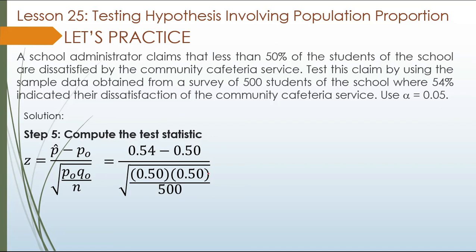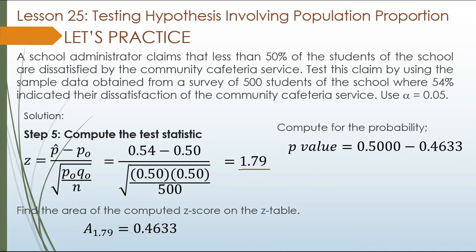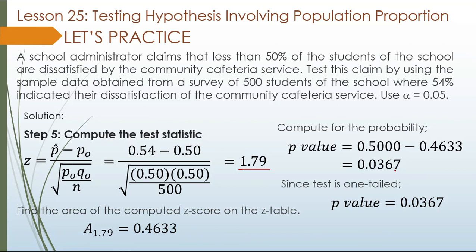Step 5: Substitute into the formula. The z value equals 1.79. Once we have the z score, we find the area equivalent to 1.79, which equals 0.4633. We subtract this from 0.5 to get the p-value: 0.5 minus 0.4633 equals 0.0367. Since this is a one-tailed test, we do not multiply by 2. So 0.0367 is our final p-value.